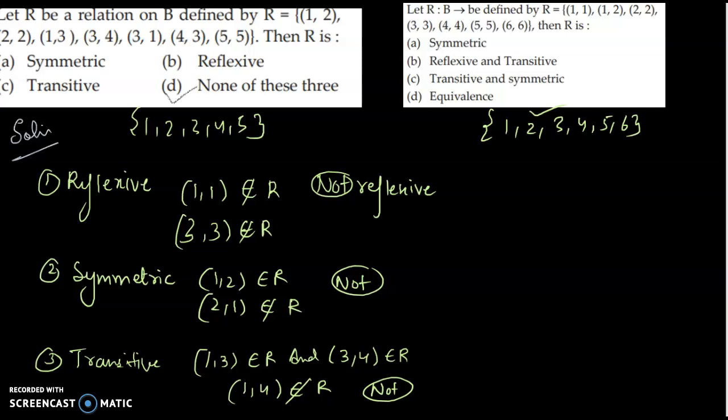For the next set {1,2,3,4,5,6}: (1,1) does not belong to R, so it's not reflexive. For symmetric: (1,2) belongs to R but (2,1) does not — not symmetric. For transitive: (1,3) and (3,4) belong to R but (1,4) does not belong to R — not transitive. Answer: none of these.